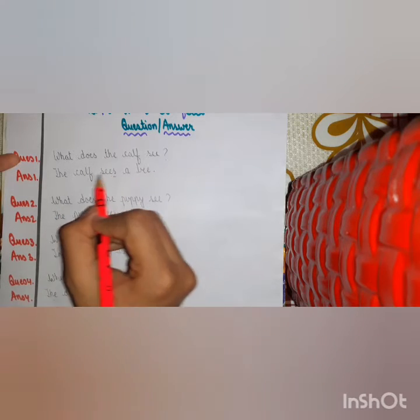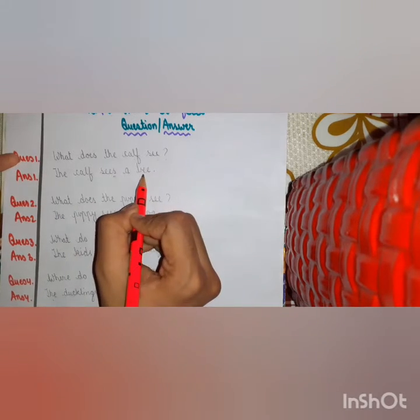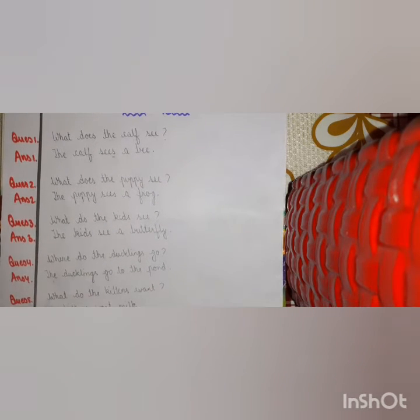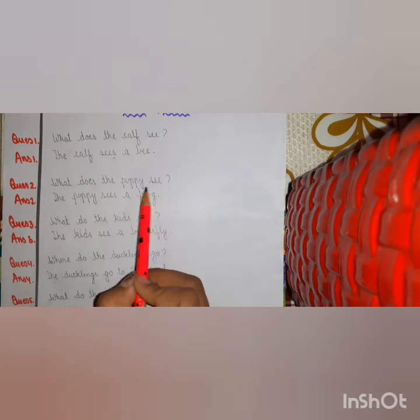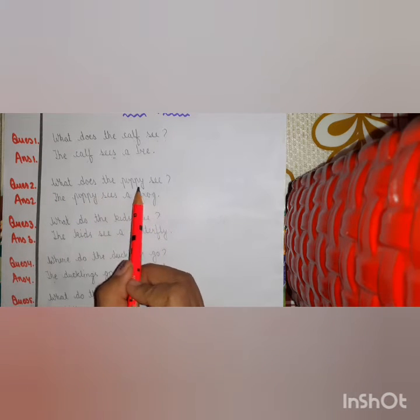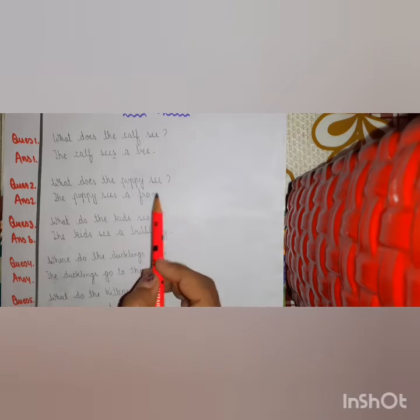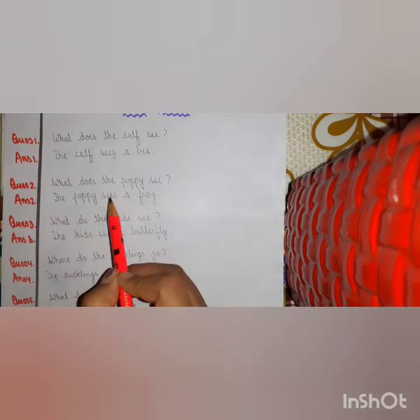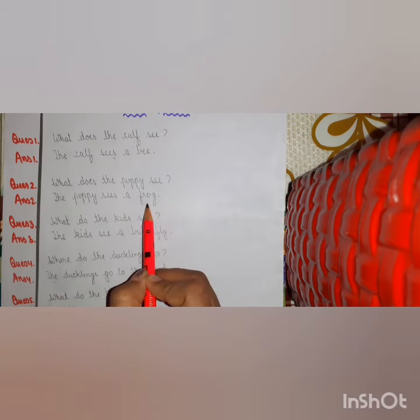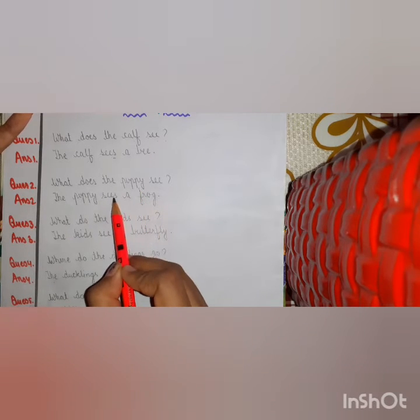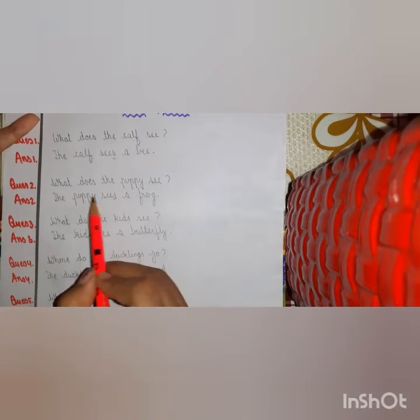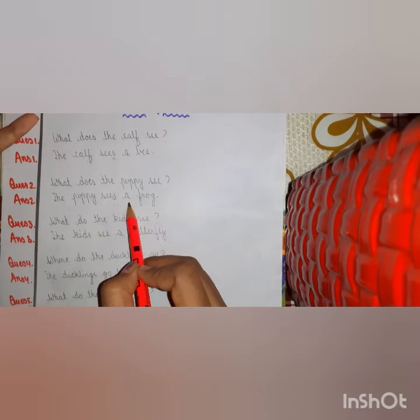Question 2: What does the puppy see? The puppy sees a frog. Puppy ne frog dekha, that means it sees a frog. Again, we use 'sees' with S because it is singular. So, the puppy sees a frog.